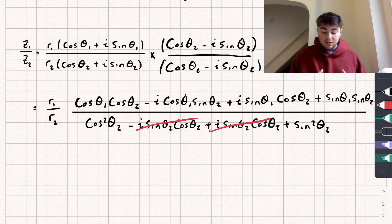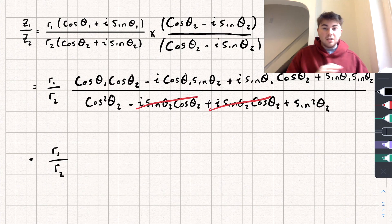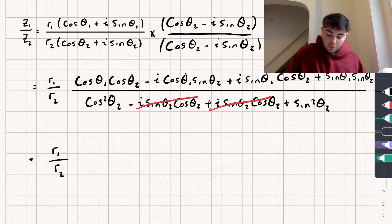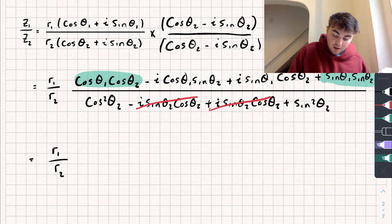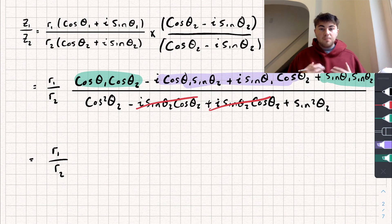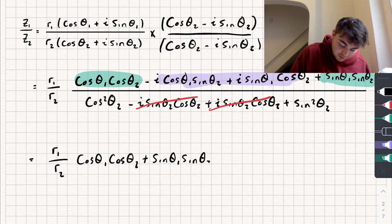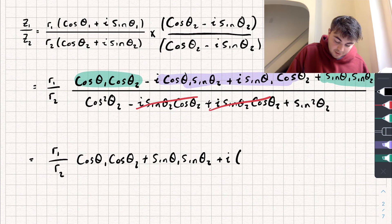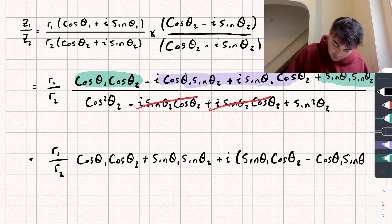Notice the two imaginary terms in the denominator cancel, leaving cos²theta2 plus sine²theta2, which by the Pythagorean identity equals 1. So the denominator disappears. We rewrite with r1/r2 and collect real and imaginary parts: cos theta1·cos theta2 plus sine theta1·sine theta2, plus i·(sine theta1·cos theta2 minus cos theta1·sine theta2).